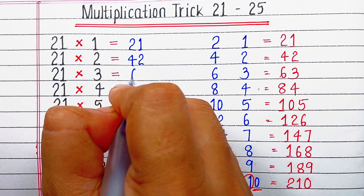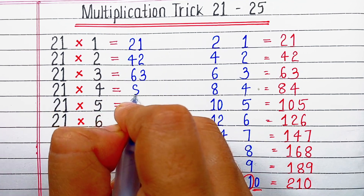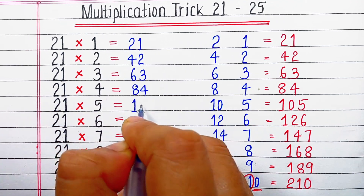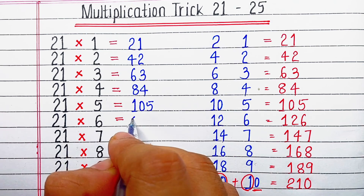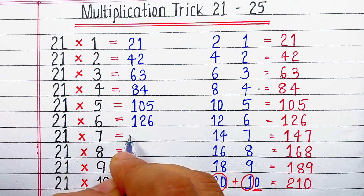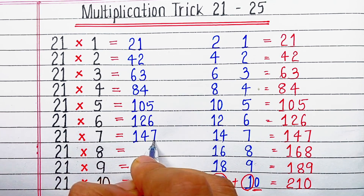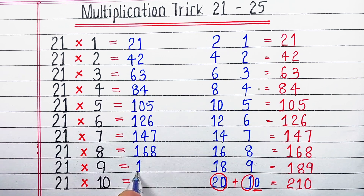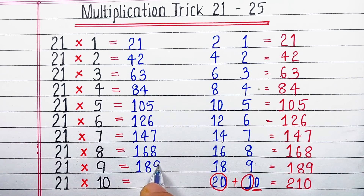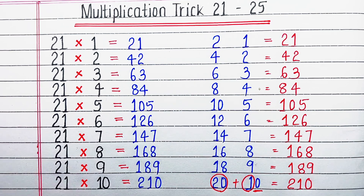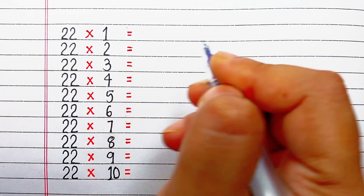So let's start writing: 21 ones are 21, 21 twos are 42, 21 threes are 63, 21 fours are 84, 21 fives are 105, 21 sixes are 126, 21 sevens are 147, 21 eights are 168, 21 nines are 189, 21 tens are 210. Now we will learn the trick for table of 22.